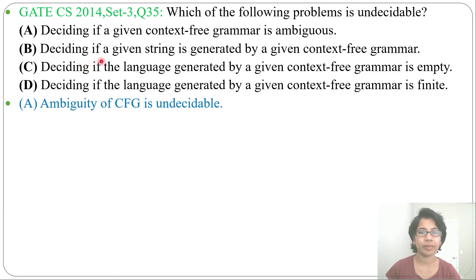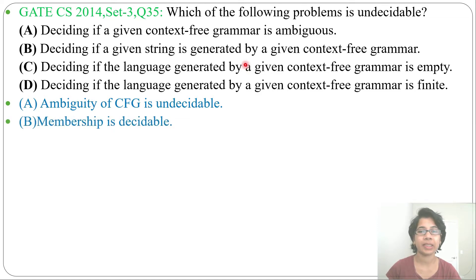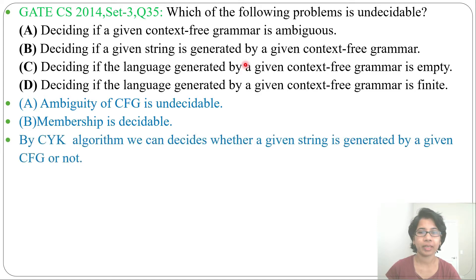Next, option B: deciding if a given string is generated by a given context-free grammar. This is a membership problem, and for the membership problem there is an algorithm called the CYK algorithm. By the CYK algorithm, you can check whether any string belongs to that grammar or not. So there is an algorithm — that's why it is decidable. For context-free grammars, the membership property is decidable.